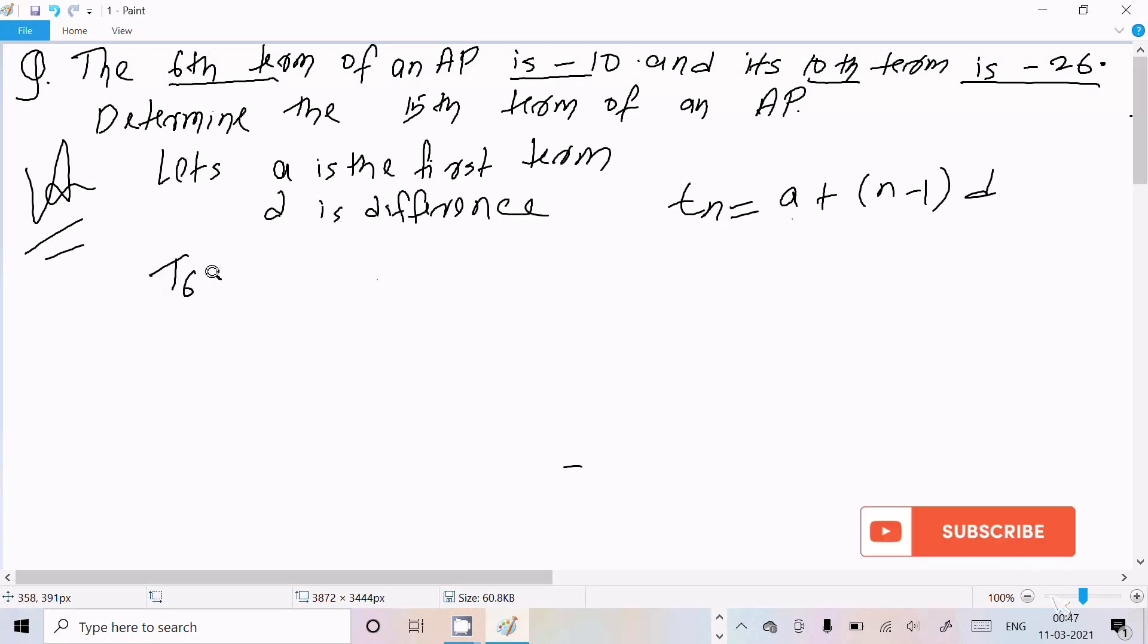So here our sixth term: T₆ = A, we don't know here n, so n is now 6 minus 1 into D. So if I calculate this, T₆ = A + 5D.